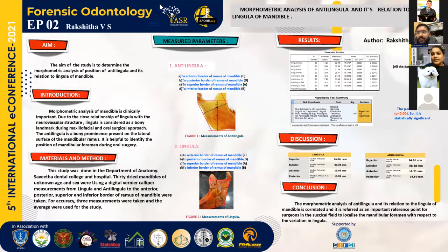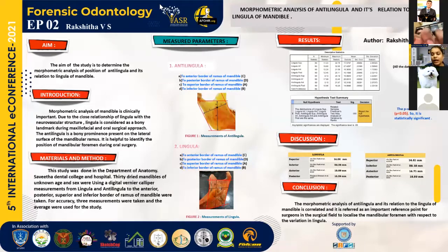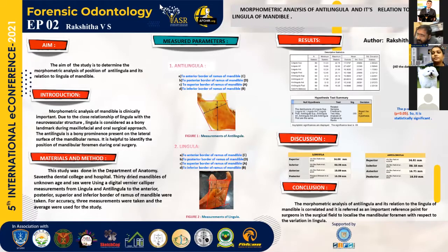The inferior alveolar nerve is the branch of the mandibular nerve and is considered to be the third branch of the trigeminal nerve. This inferior alveolar nerve supplies sensation to the lower teeth. When there is variation in linguella, this can lead to unsuccessful inferior alveolar nerve block anesthesia. About 10–15% of inferior nerve block anesthesia failures are due to variation in the linguella.